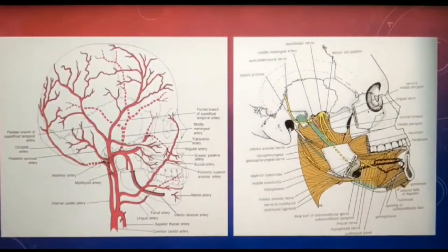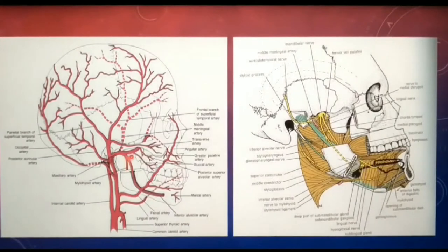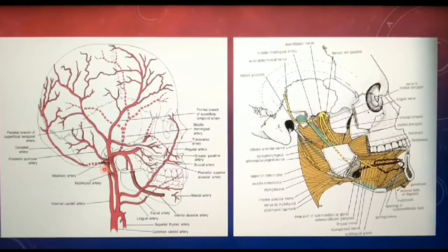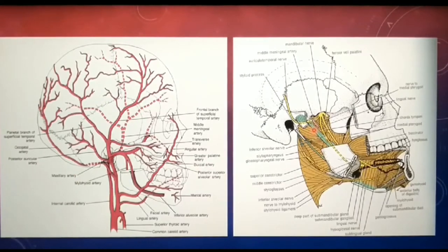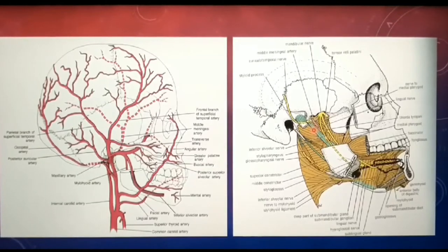The vascular supply to the TMJ arises anteriorly from the masseteric artery and posteriorly from branches of the superficial temporal and maxillary arteries — all branches of the external carotid artery. The nerve supply to the joint is from the auriculotemporal nerve, with some additional innervation from the masseteric nerve and deep temporal nerves.